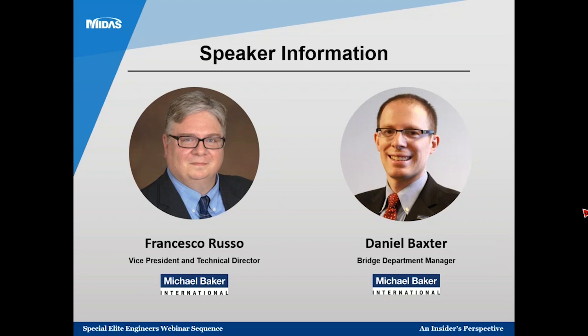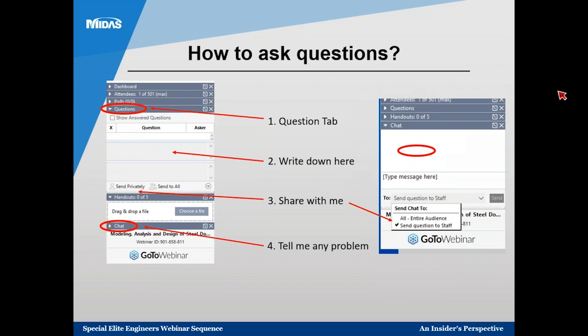Let me briefly explain how audiences can ask questions during the presentation. To ask questions, there is a question tab on the control panel. First, open the question tab. Second, write your questions in the empty space. Third, send the questions. You can also use the chat function — open the chat tab, select 'send question to staff,' and your question will be shared with Frank, Daniel, and me. I will gather all questions and share them at the end so Daniel and Frank can answer after the presentation.